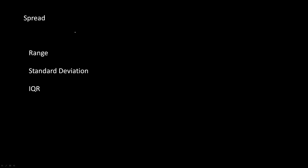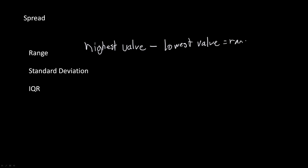The third way to describe a numerical graph is the spread. There are three valid ways to do this. The first is the range: it's the highest value subtracted by the lowest value of a data set. For example, if you had a data set of 2, 3, and 4, the highest value of 4 minus the lowest value of 2 gives a range of 2.